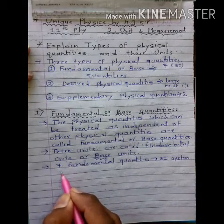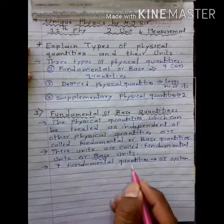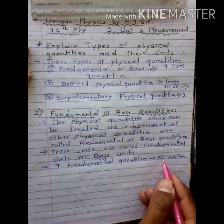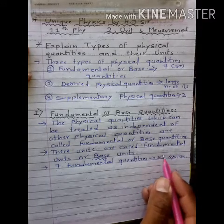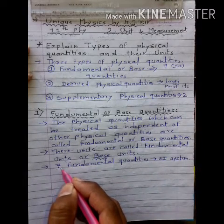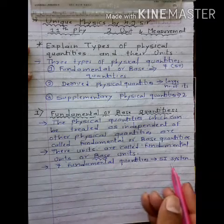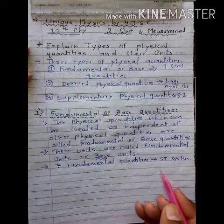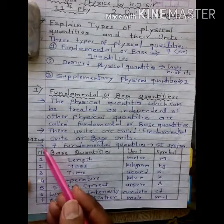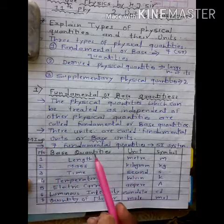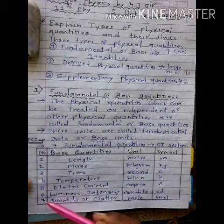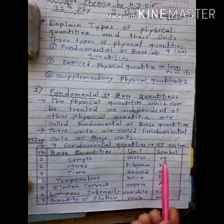There are seven fundamental or base quantities in the SI system — the international system of units. Here we explain these seven physical quantities as fundamental physical quantities in the SI system. Prepare this table; it is the most important table of this chapter. The table of the SI system shows seven base quantities, their units, and their symbols.